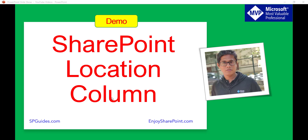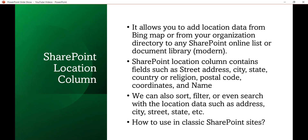I'll show you for both classic sites as well as modern sites. The location column is not new — Microsoft has already introduced this column, and we can use it to get data from Bing Maps or from your organization directory into any SharePoint list or library. This column includes sub-fields like street address, city, state, country, region, postal code, coordinates, and name. You can also use this column to sort, filter, or search by location data such as address, city, or state.